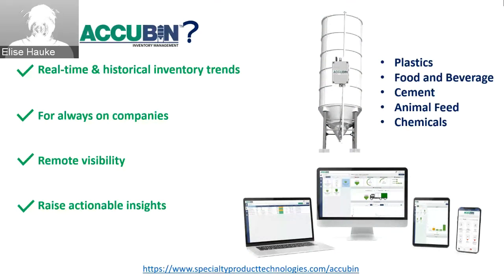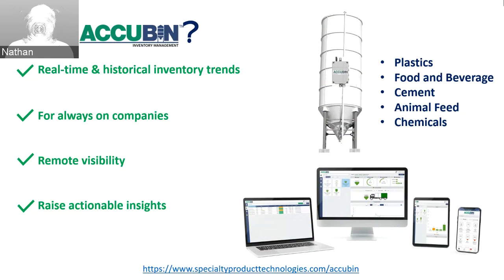One more question: who has access to view the data? As far as access, we have three different levels that users are granted: an admin, an add/delete, and view only. Whoever is designated as your admin has the ability to give access to whoever they choose — that could range from an operator on your line, production employees, procurement, supply chain, whoever's ordering your raw goods, up to your VPs and executive levels. There's not a limit to the users that can be added.